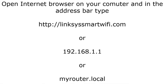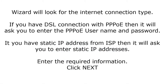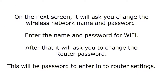In the address bar, type linksyssmartwifi.com. If that doesn't work, type 192.168.1.1 or myrouter.local. You will see the setup screen — read and agree to the terms and conditions, then click Next. The installation wizard will detect your internet connection type. If you have a DSL connection with PPPoE, it will ask for the PPPoE username and password. If you have a static IP, it will ask for the static IP addresses. Enter the required information and click Next.